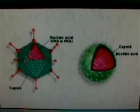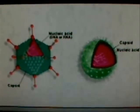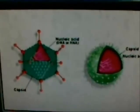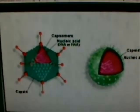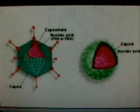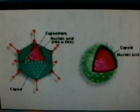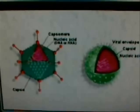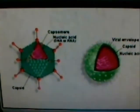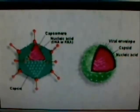The individual protein subunits of the capsid are called capsomeres. Some viruses, such as influenza, are further enclosed by a membrane called an envelope. This consists of proteins from the cell membrane or nuclear envelope of the host cell, as well as viral proteins.